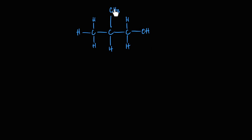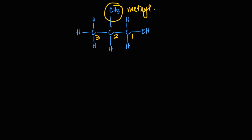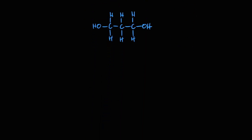This is slightly different: the OH determines the numbering and is on carbon number one. Carbon number two has a methyl substituent. It's a three-carbon chain — 'prop' — all single bonds — '-an' — and the alcohol is on carbon one. The name is 2-methylpropan-1-ol.